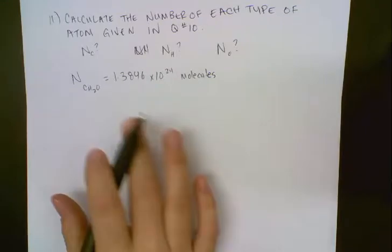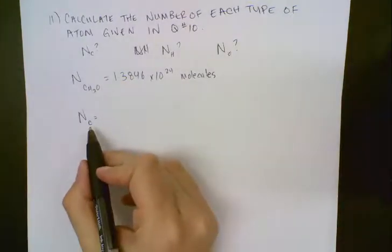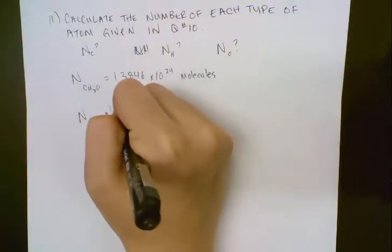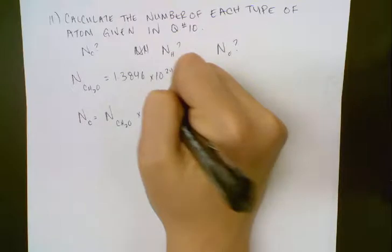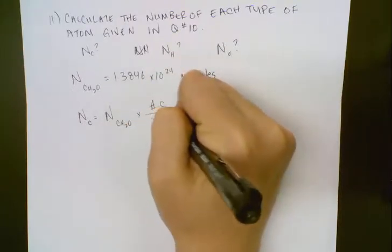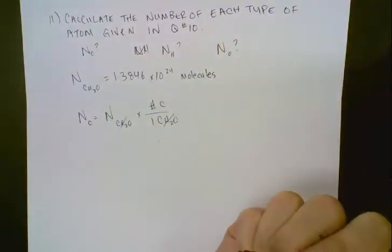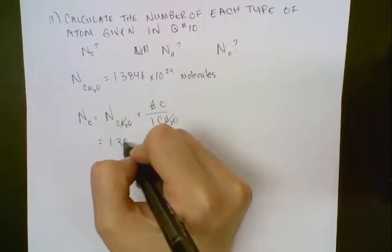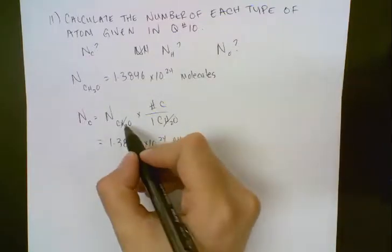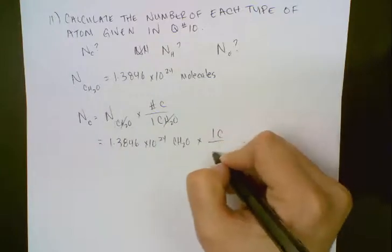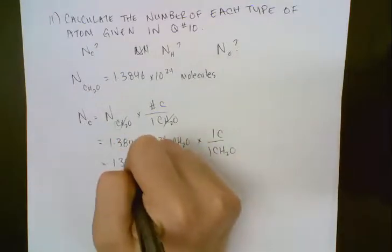We're going to use the conversion formula we learned. Starting with how many carbon do we have — we don't know how many carbon we have, but we do know how many CH₂Os we have. So we need to multiply that by how many carbon we have in 1 CH₂O. We put in 1.3846 times 10 to the 24 CH₂Os and multiply by 1 carbon in any 1 CH₂O. So that's just multiplying by 1, and our answer is going to be the same.